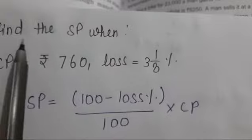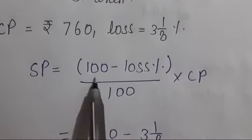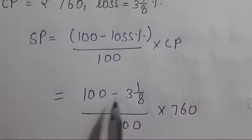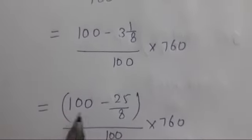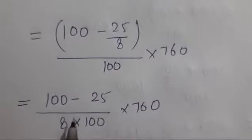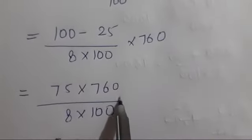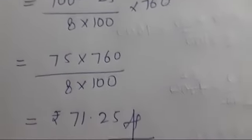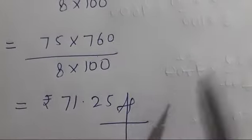Next question number 2. Find the SP when CP is 760 and loss is 3⅛ percent. SP equals (100 minus loss percent) upon 100 times CP. This is (100 minus 25/8) upon 100 times 760. Simplifying to (75 times 760) upon (8 times 100). After canceling and simplifying, the answer is 71.25.